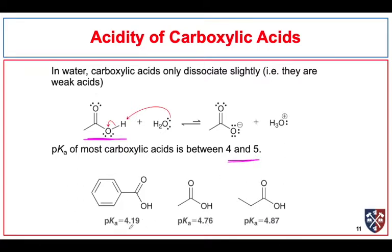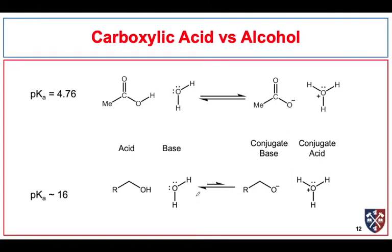Acetic acid has a pKa of 4.76. Benzoic acid is slightly more acidic because of the electron-withdrawing nature of the phenyl group. Propanoic acid is slightly less acidic due to the electron-donating properties of the methyl group relative to the hydrogen it replaced. Carboxylic acids are considerably more acidic than alcohols — both have an OH functionality, but for ethanol the pKa is around 16, so very much less acidic than acetic acid at 4.76.